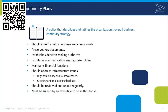The BCP, or business continuity plan, is a policy that describes the organization's overall business continuity strategy. It involves the identification of critical systems and components — we want to make sure that all of our assets are protected. It should also preserve key documentation and ensure the survival of the organization by doing so.